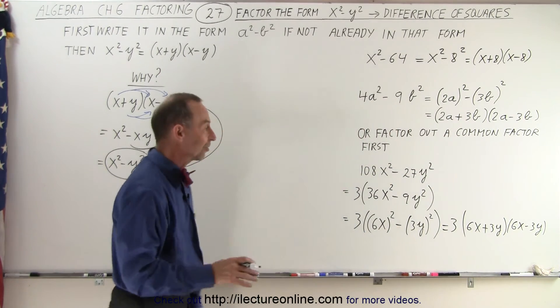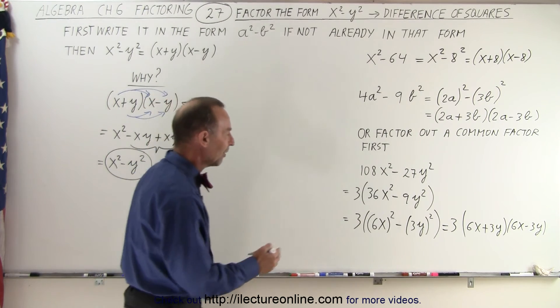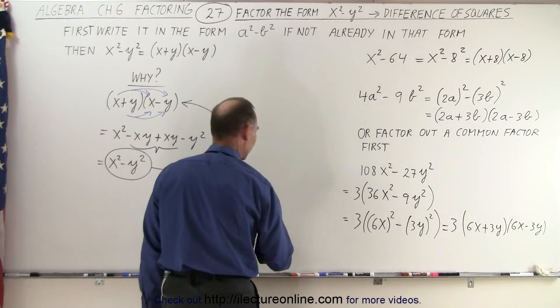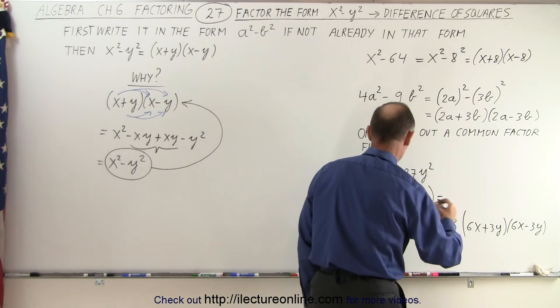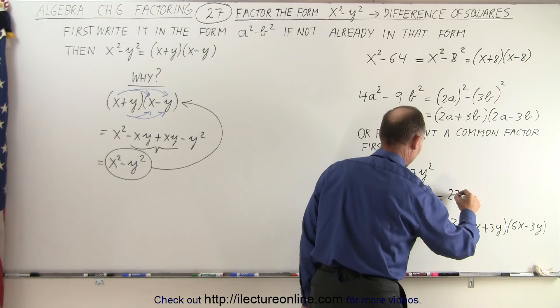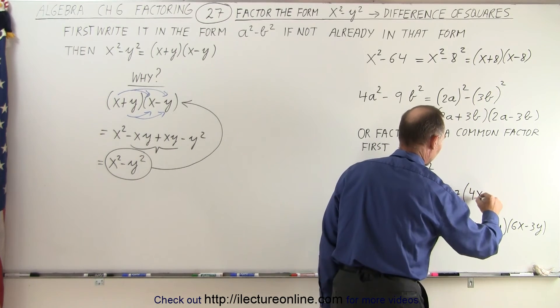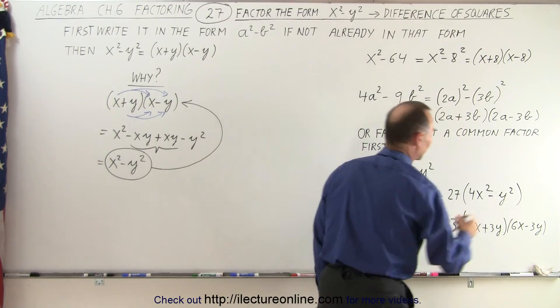And of course, then you realize, actually, I could have factored out some other things that would have made it a lot better. I could have factored out a 9 from both cases. And if I had done that, I would have written this as, this can factor out another 9, so that would mean 9 times 3, which is 27 times, that would be 4x squared minus y squared, like this.